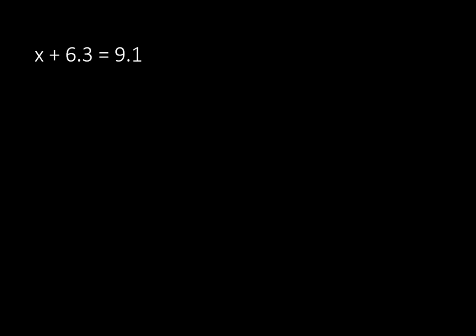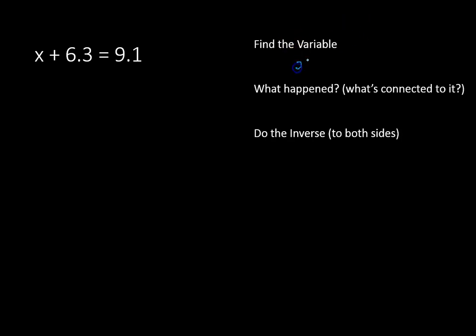x plus 6.3 is equal to 9.1. We're going to follow these same three steps. Find the variable. Our variable is x. What happened to our variable? We added 6.3 to this variable, right there. And now we're going to do the inverse, or the opposite, which is subtracting 6.3 from both sides of the equation. That'll look like this.